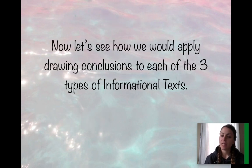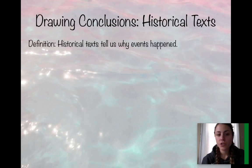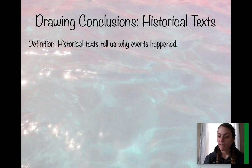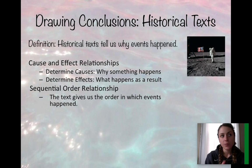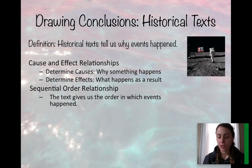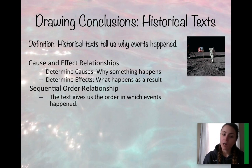Now let's see how we would apply drawing conclusions to each of the three types of informational texts: historical, scientific, and technical. When drawing conclusions in a historical text — which tells us why events in the past happened — the relationships within these texts are cause and effect relationships and sequential order relationships. Cause and effect means why something happened and what happens as a result. Sequential order means the text gives us an order in which events happen, and it's important to know what comes first and what comes after.